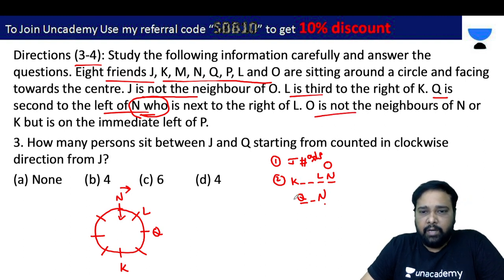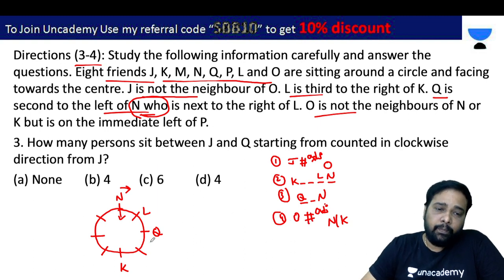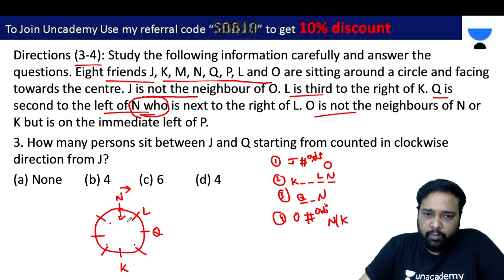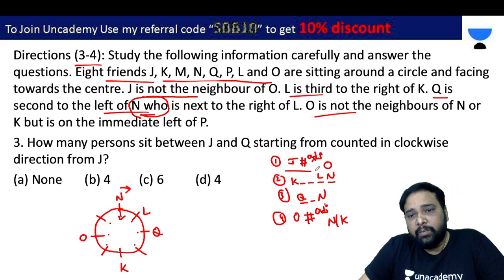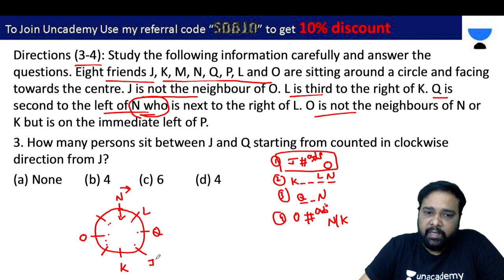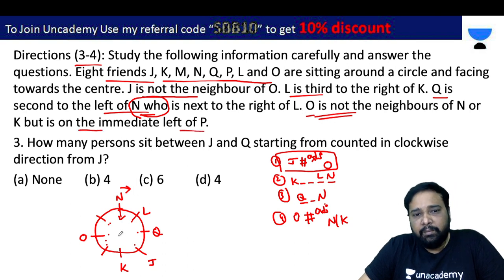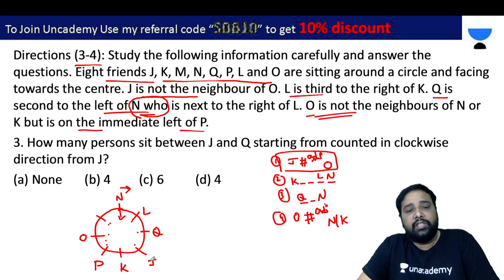O is not adjacent to N or K. O is on the immediate left of P. O is not adjacent to N or K, so we place O accordingly on the immediate left of P.